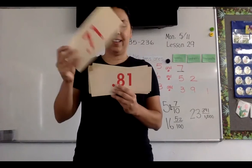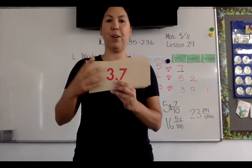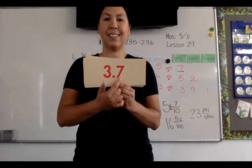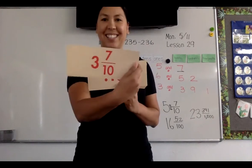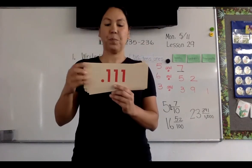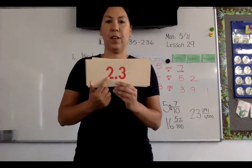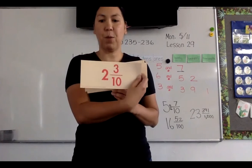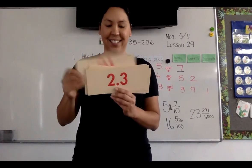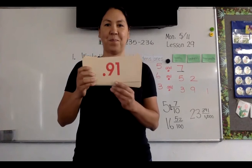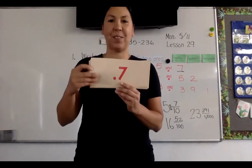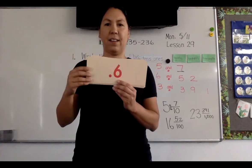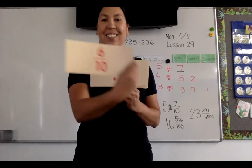I'm going to fast forward through some of these — I want to get to a mixed number. How would I say this one? Three and seven tenths. How about this one? Two and three tenths. This one? Ninety-one hundredths. Seven tenths. Six tenths. Whenever there's only one digit, that makes it easy — just say it over ten.